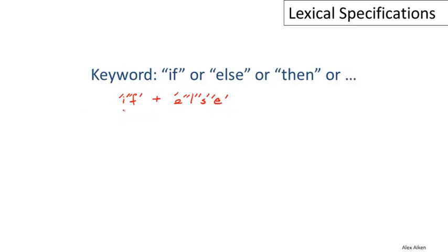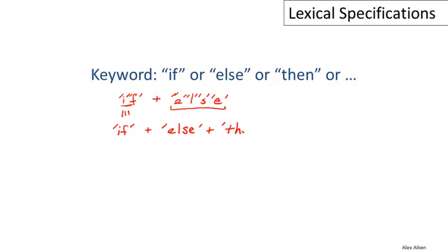So in fact, there's a shorthand that's normally used. If I want to write a regular expression for a sequence of single character expressions, I could just put quotes around the outermost characters in the sequence. For example, most of the tools will let you write this: I put a quote at the beginning, write 'IF', then close quote. This is the concatenation of two single character regular expressions. Similarly for else and then. If I have more keywords, I just write them out and union them all together.